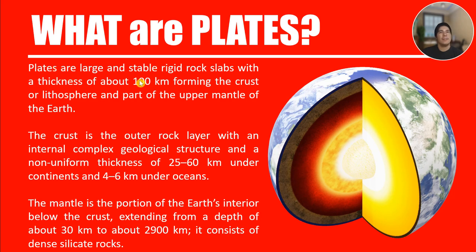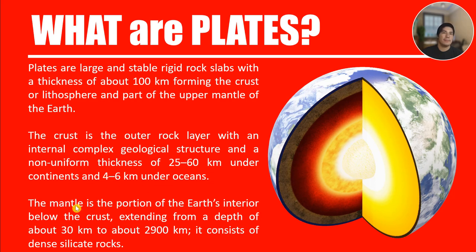Plates are large and stable rigid rock slabs with a thickness of about 100 kilometers, forming the crust or lithosphere and part of the upper mantle of the earth. The crust is the outer rock layer with an internal complex geological structure and a non-uniform thickness of 25 to 60 kilometers under continents and 4 to 6 kilometers under ocean. The mantle is the portion of the earth's interior below the crust, extending from a depth of about 30 kilometers to about 2,900 kilometers, consisting of dense silicate rocks.